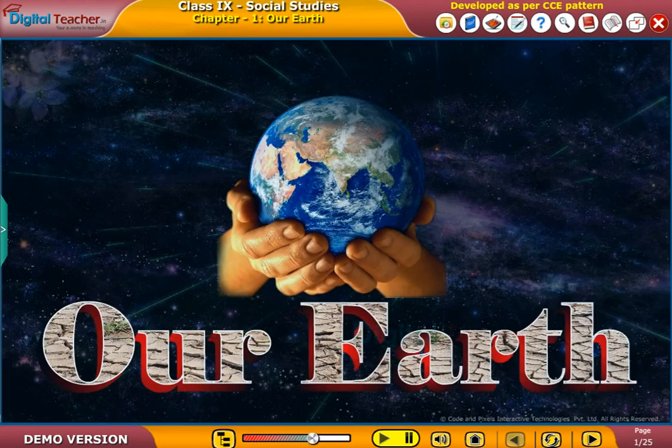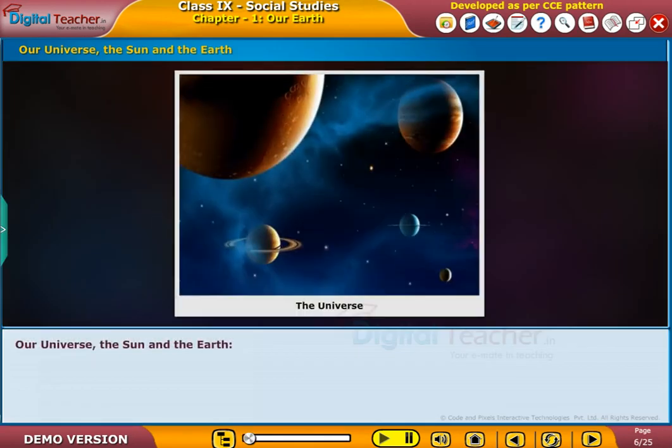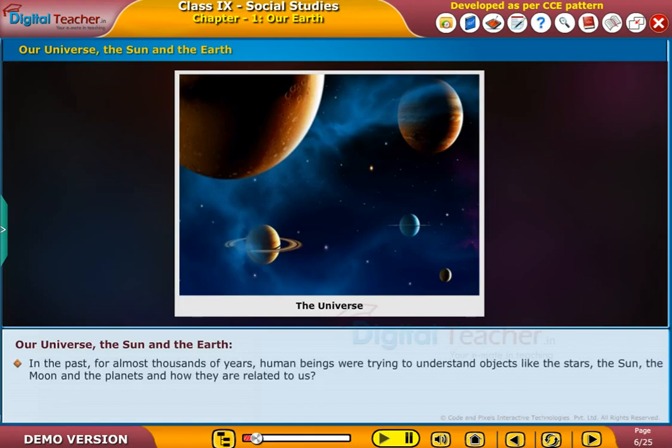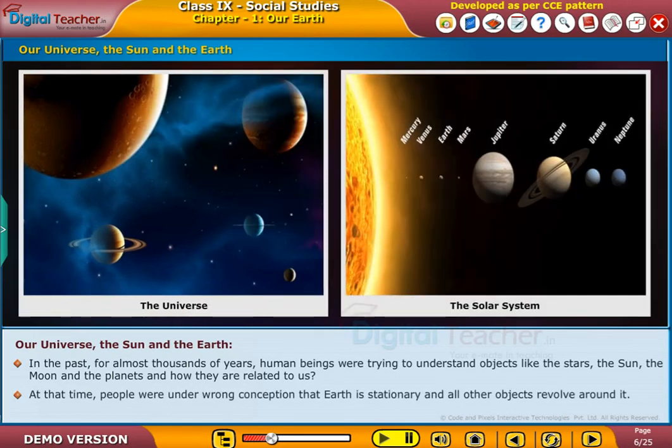Welcome to the chapter. In the past, for almost thousands of years, human beings were trying to understand objects like the stars, the Sun, the Moon, and the planets and how they are related to us. At that time, people were under the wrong conception that Earth is stationary and all other objects revolve around it.